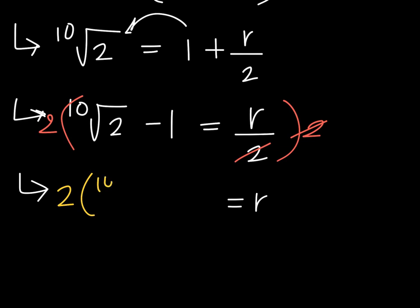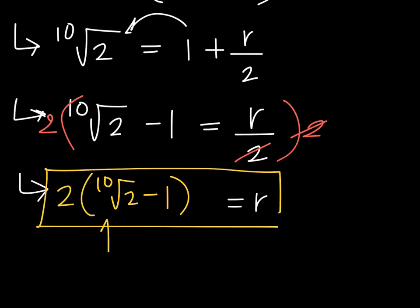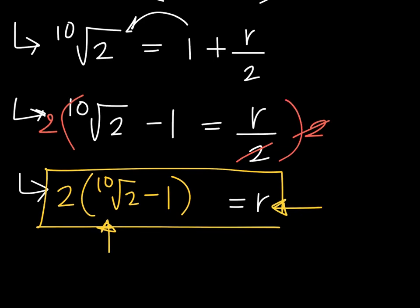I suggest you input this value in the calculator directly using parentheses. The tenth root of 2 minus 1, and this will give you R.